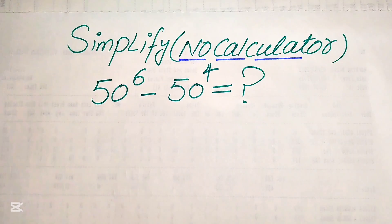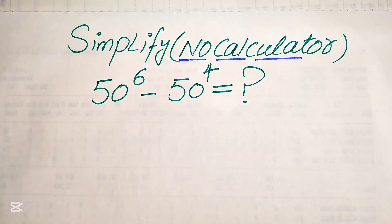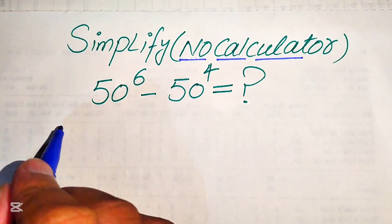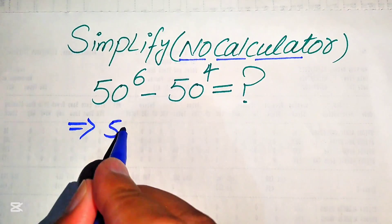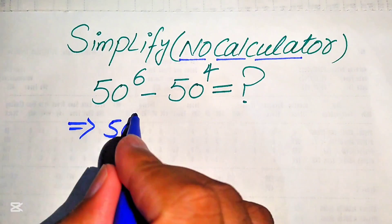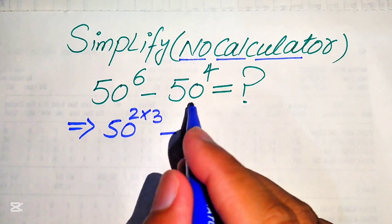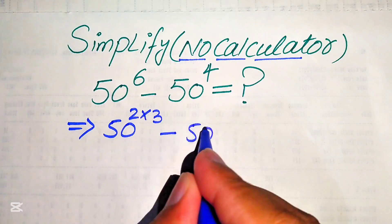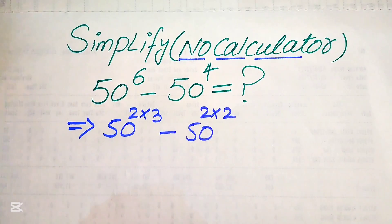I hope you like this method, but if you have any other method in mind, please do not hesitate to write it in the comment section. Now, first we need to focus on the exponents of both terms. We break the exponent of the first term, writing 6 as 2 multiplied by 3, and in the same pattern we write the exponent 4 as 2 multiplied by 2.